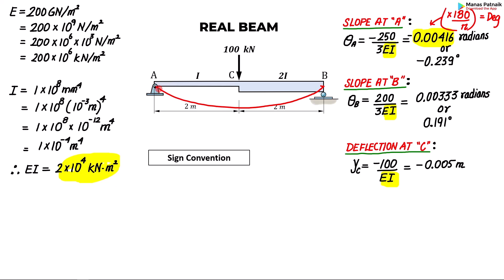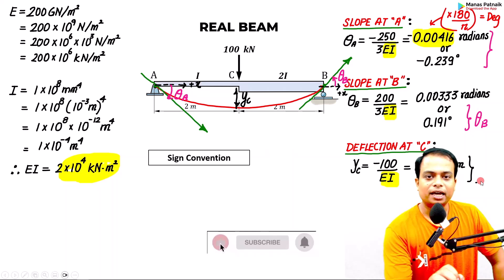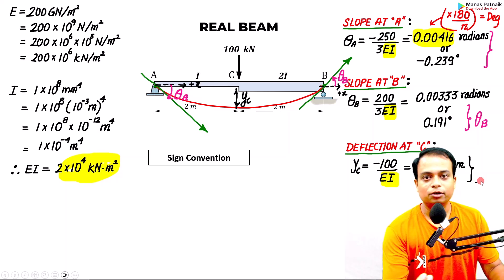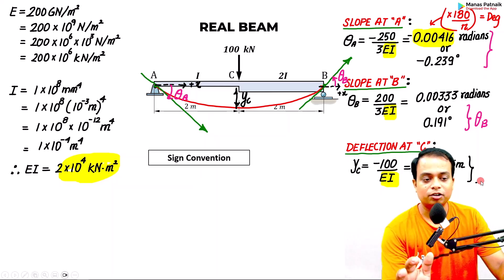Finally, I will draw the elastic curve. This is the slope at A — theta_A is measured with respect to the positive x-axis. Similarly, theta_B is the slope at B, also measured with respect to the positive x-axis. And over here you have the deflection y_C, which we have calculated. That was all from my side for today. This content from mechanical and civil engineering is going to help you boost your confidence — not just for examinations in college, but in real life also. This is Manas Patnaik signing off. Take care and have a nice day.